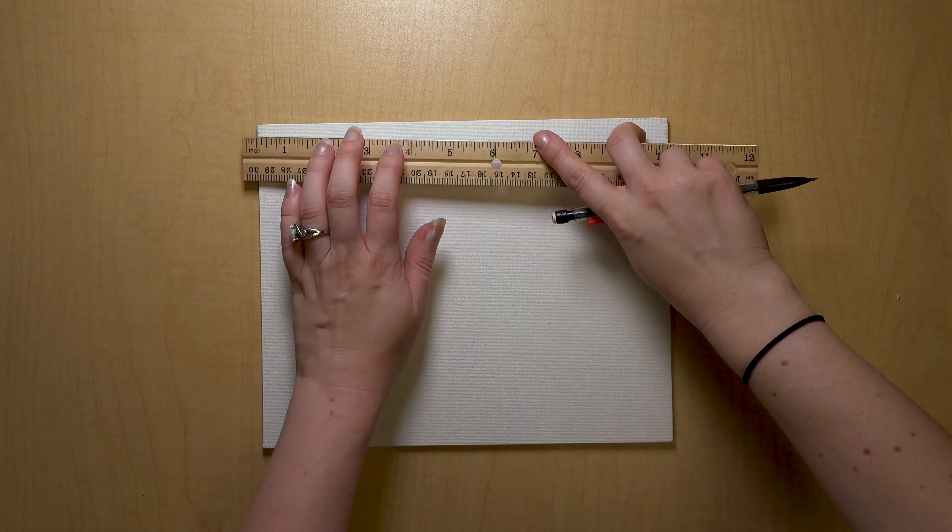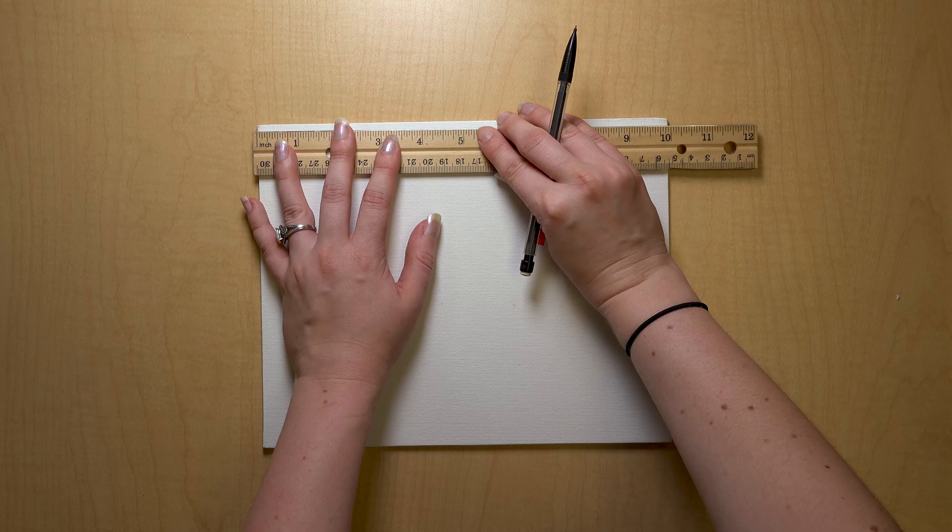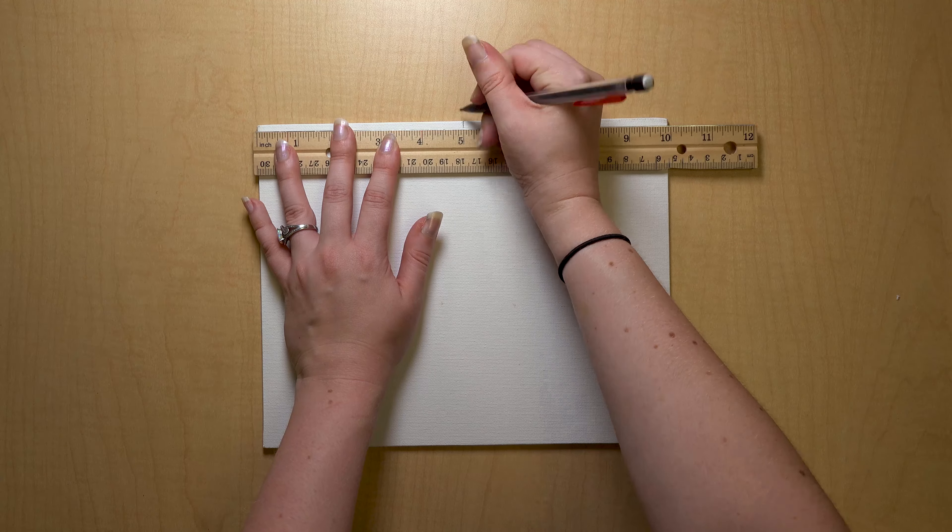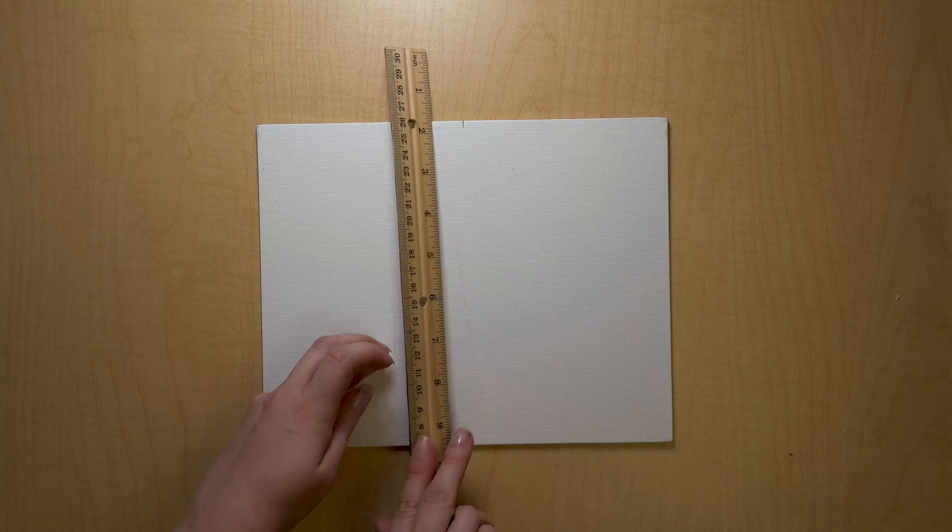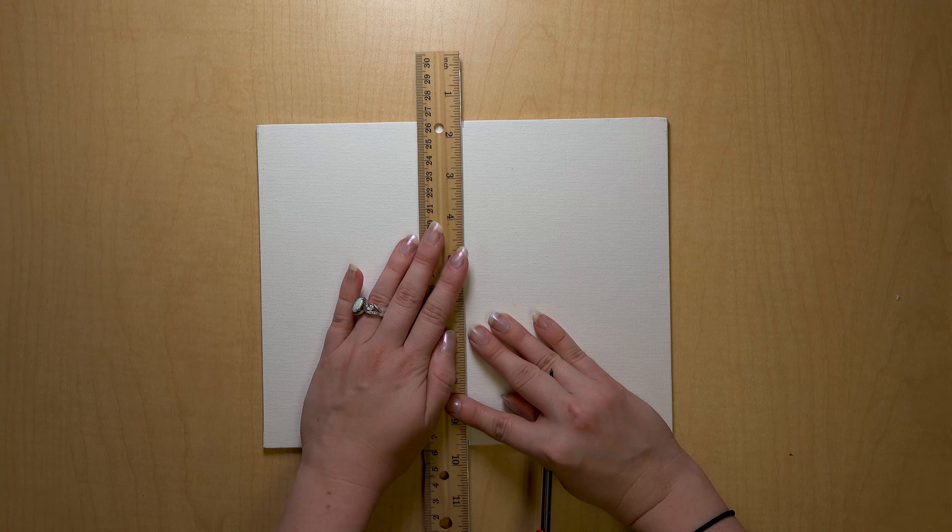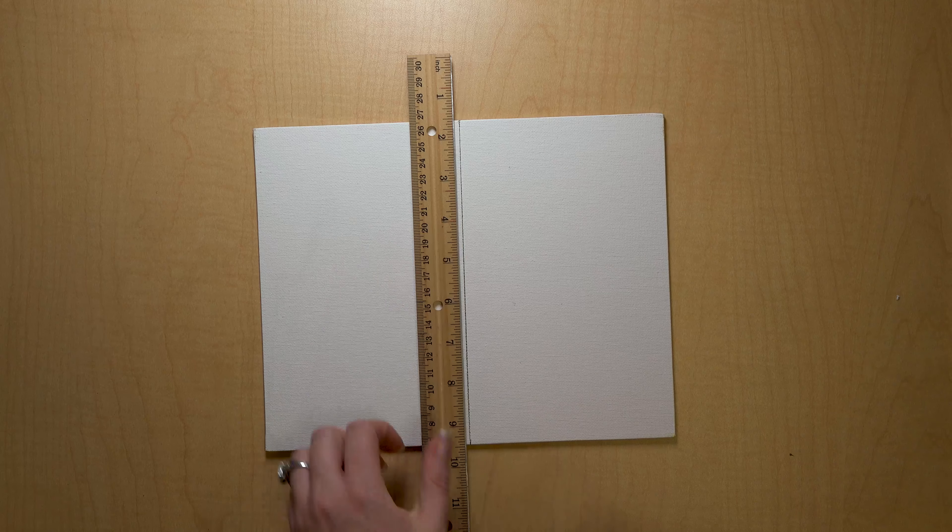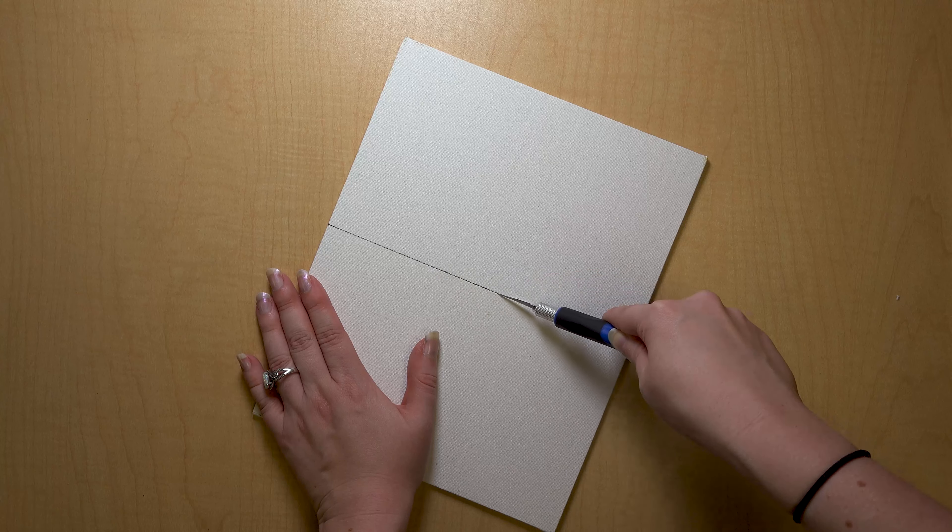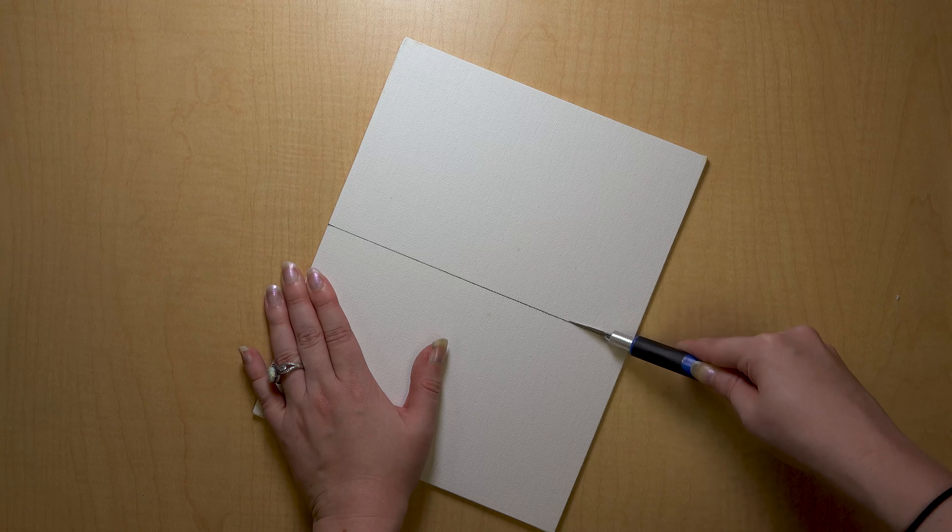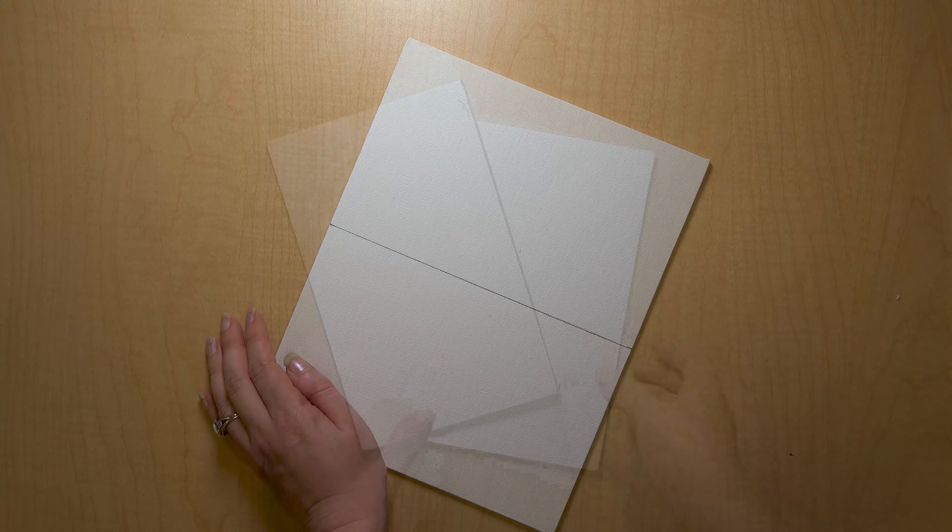While our interior is drying, we can work on the front and back covers of the notebook. This is where you can get really creative. Take your canvas boards. If you need to cut them down to the size you want, go ahead and measure what you need to and cut it out with your exacto knife. Mine's nice and easy. Since my canvas board is 8 inches by 10 inches, I just have to cut it in half. Usually you can get to a point where you can kind of fold it in half and get it to split apart. One side might look a little messy, but you'll see soon that it doesn't really matter. Put these aside for now.